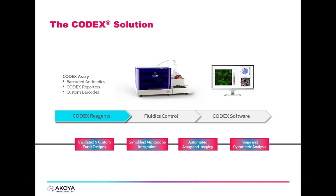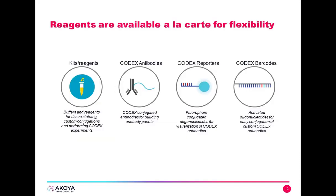CODEX has three components: the CODEX reagents; the fluidics control, which automates both the fluidics and the imaging; and the CODEX software. The CODEX reagents are a flexible system — we have the ability to use validated antibodies provided by ACOIA, and we also have custom reagents so you can conjugate DNA barcodes to your own antibodies.